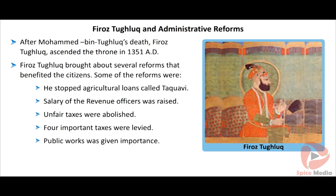Public works was given importance. Firoz Tughlaq built several dams, wells and bridges and dug many irrigational canals. Firozabad, Fatehbad, Janpur and Hisar were built by him.